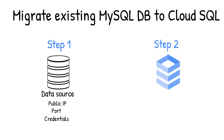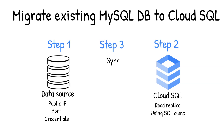Second, you create a Cloud SQL read replica, just like we discussed in the creation process, using a SQL dump file. Third, you sync the read replica with the source. And finally, you promote the read replica to primary instance with very low downtime.